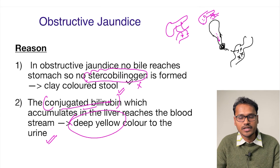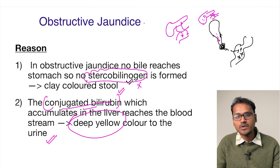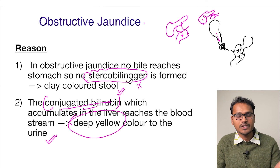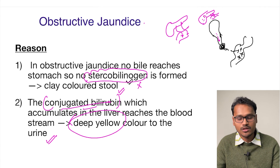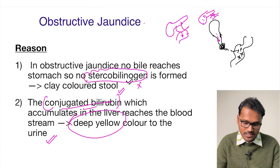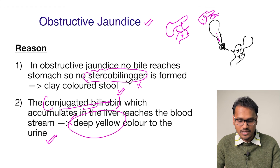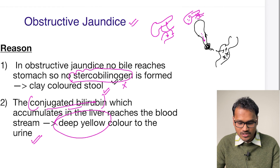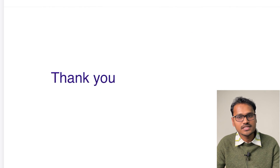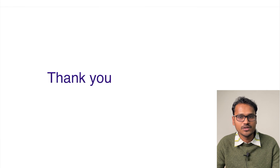So the reason is conjugated bilirubin getting excreted in the urine and giving a deep yellow color — that is why there is the appearance of clay-colored stools and deep yellow urine in case of obstructive jaundice. I hope it's clear. Thank you for watching the video.